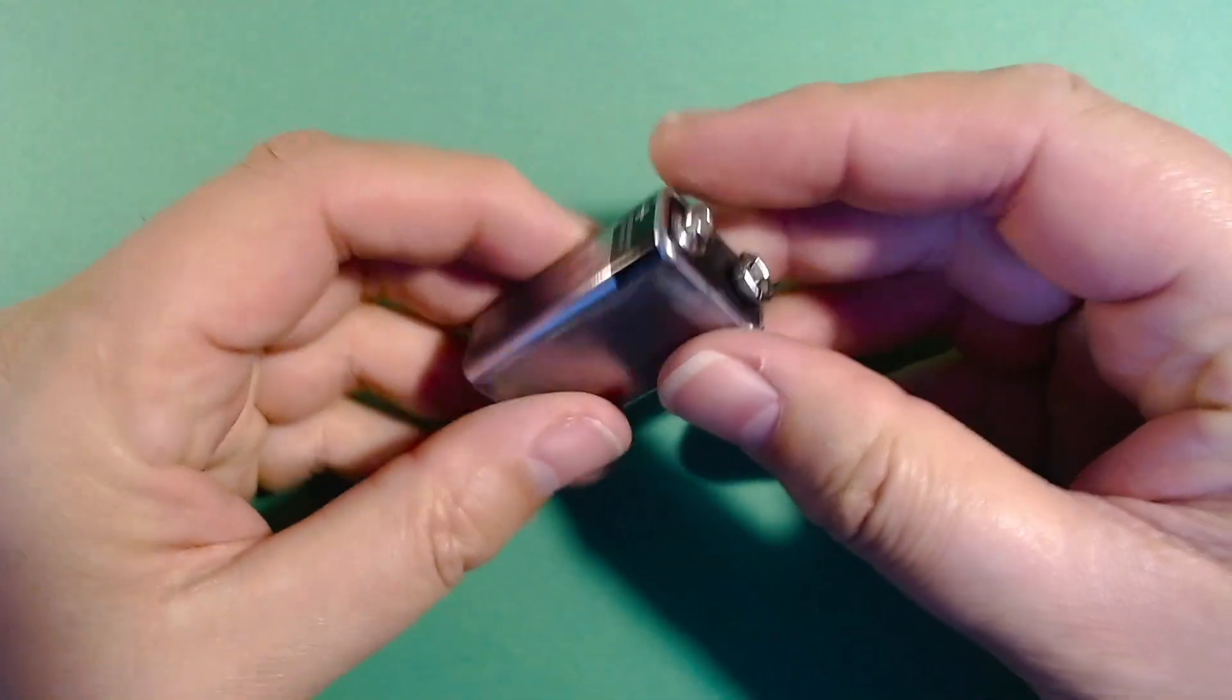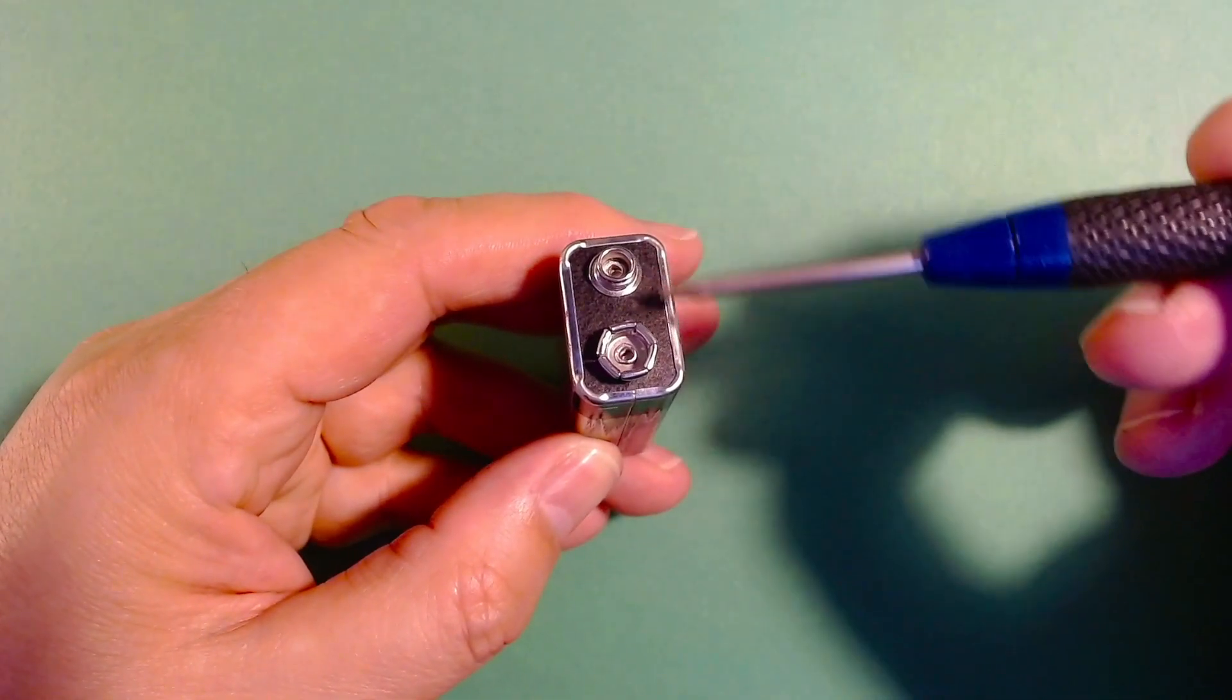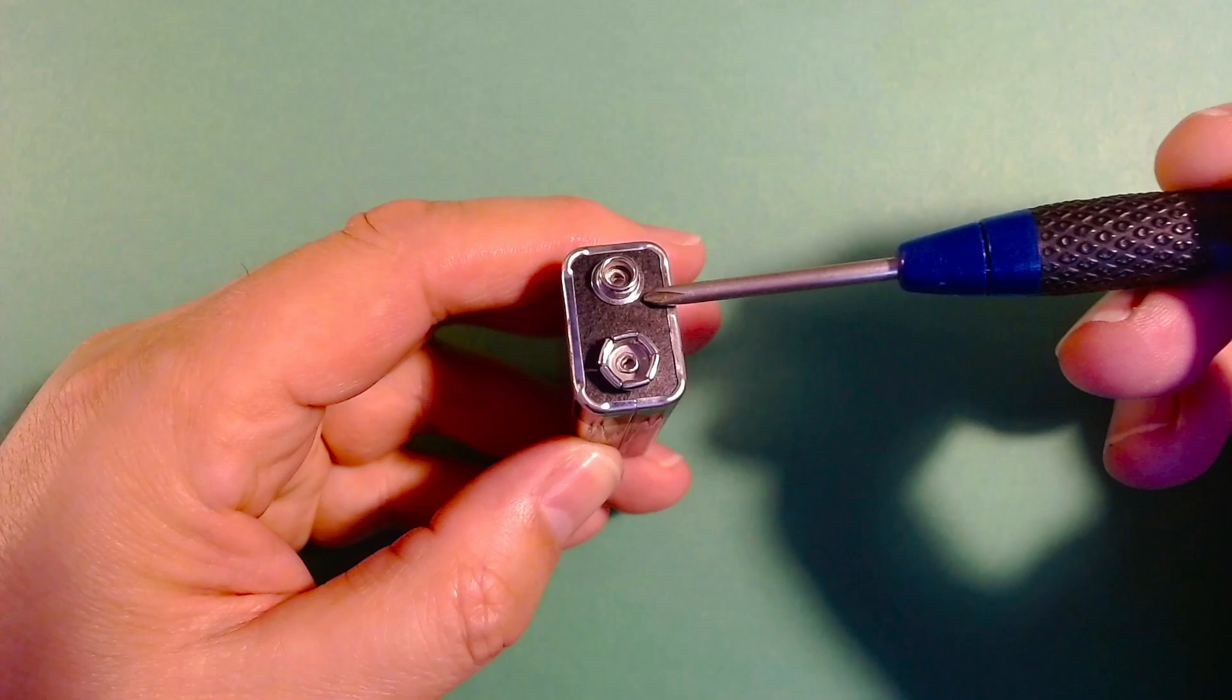First, we're going to need an old dead 9-volt battery. We're going to be taking this particular part out of the battery and this is what we're going to use for the new connector.